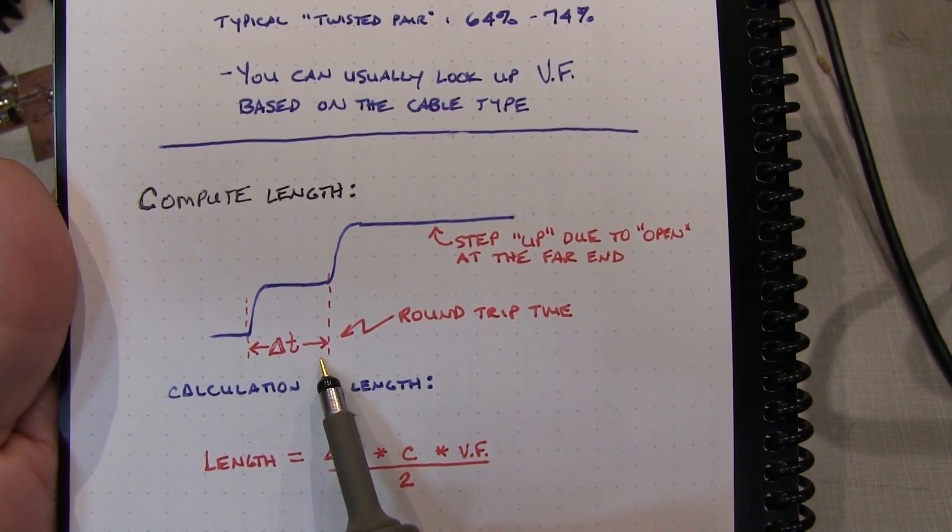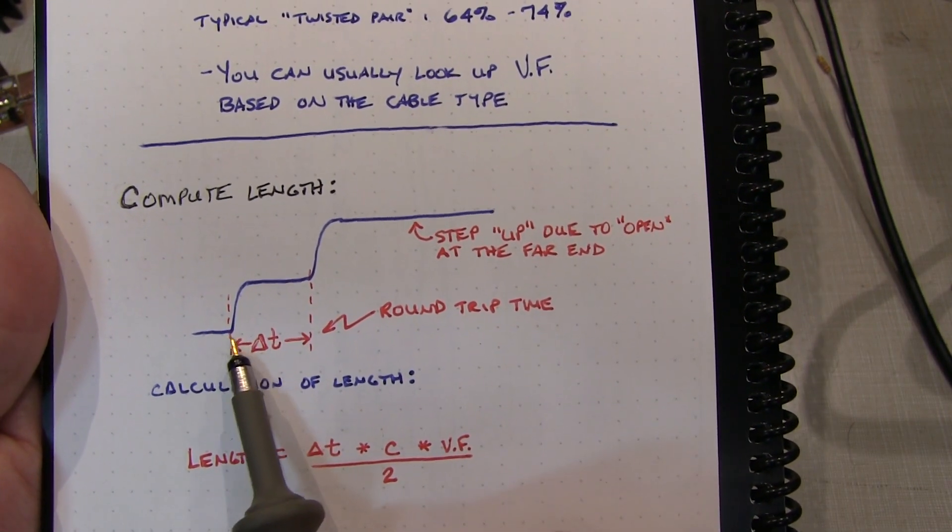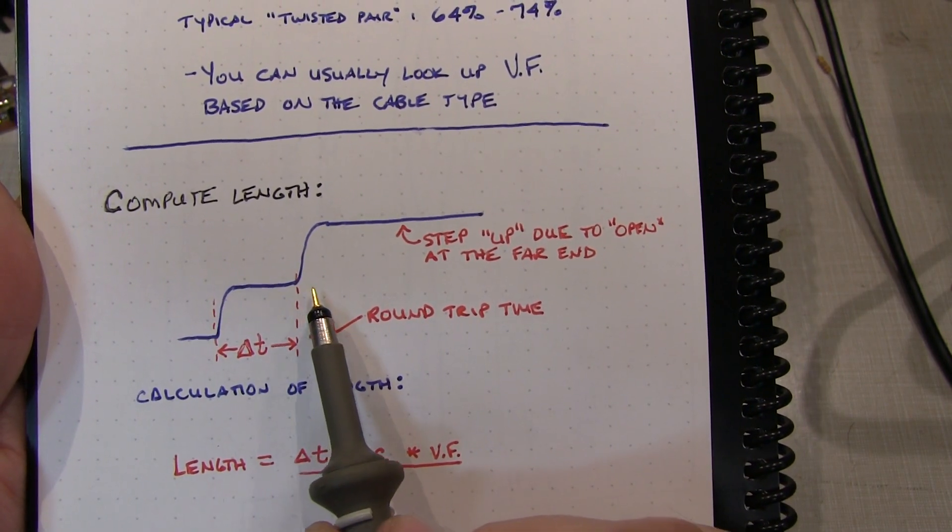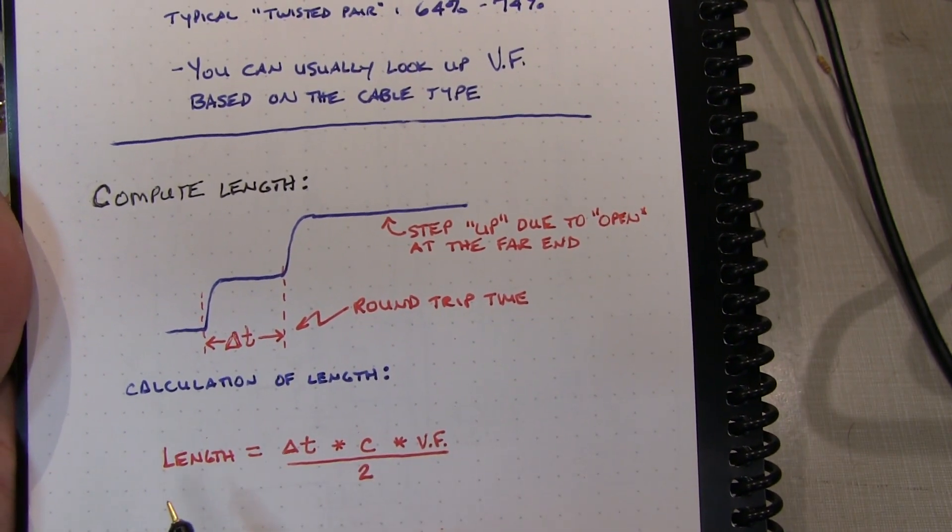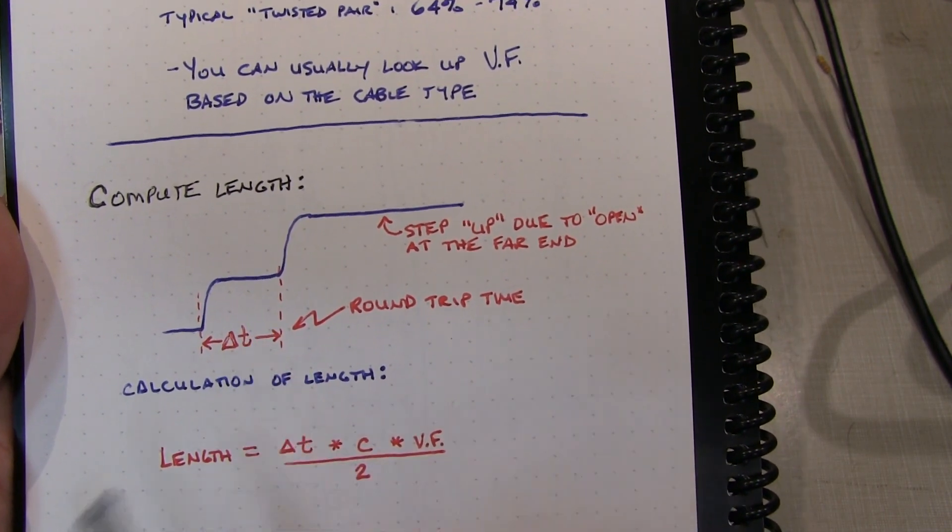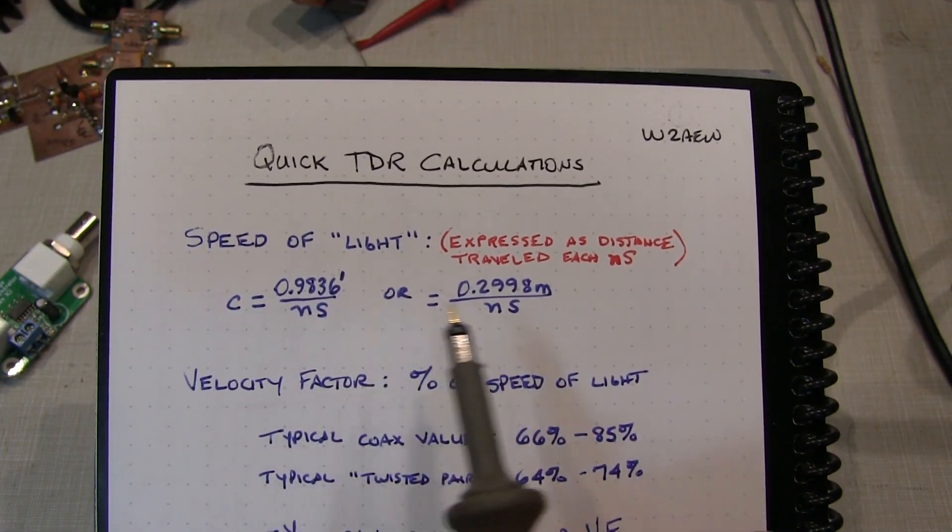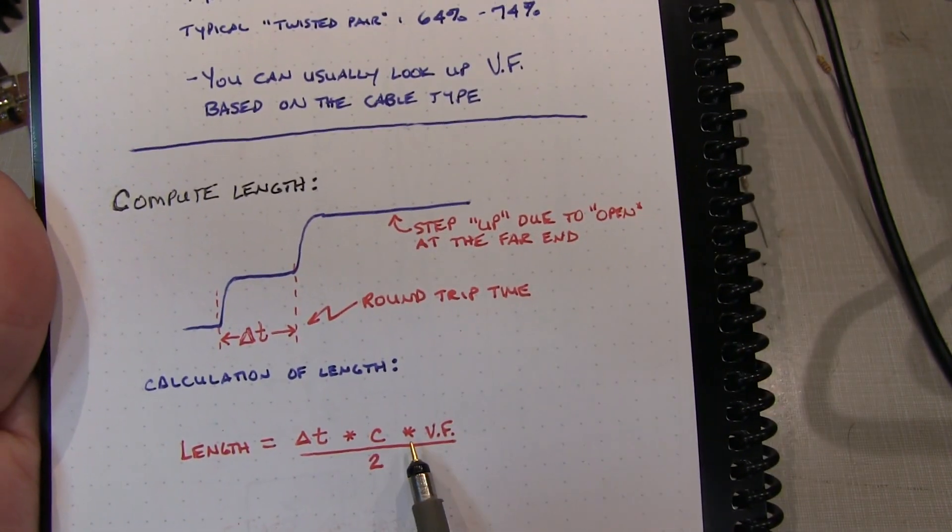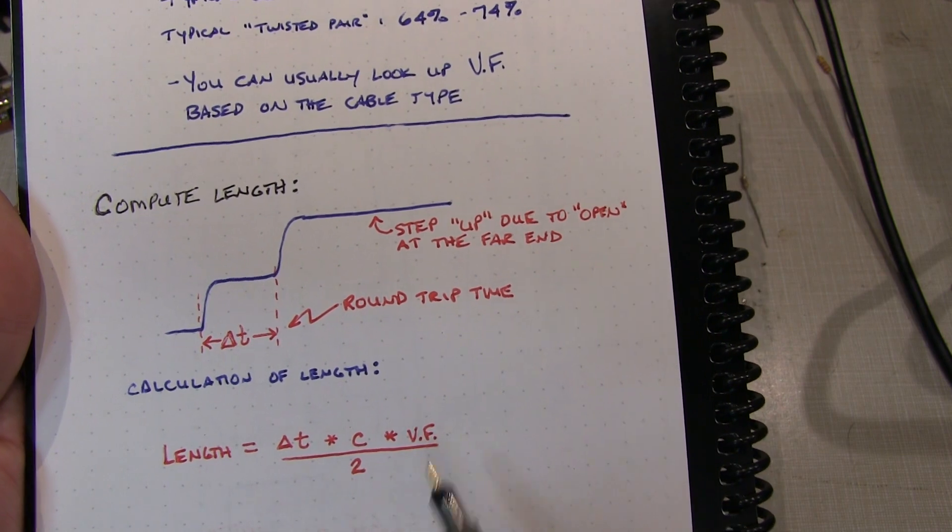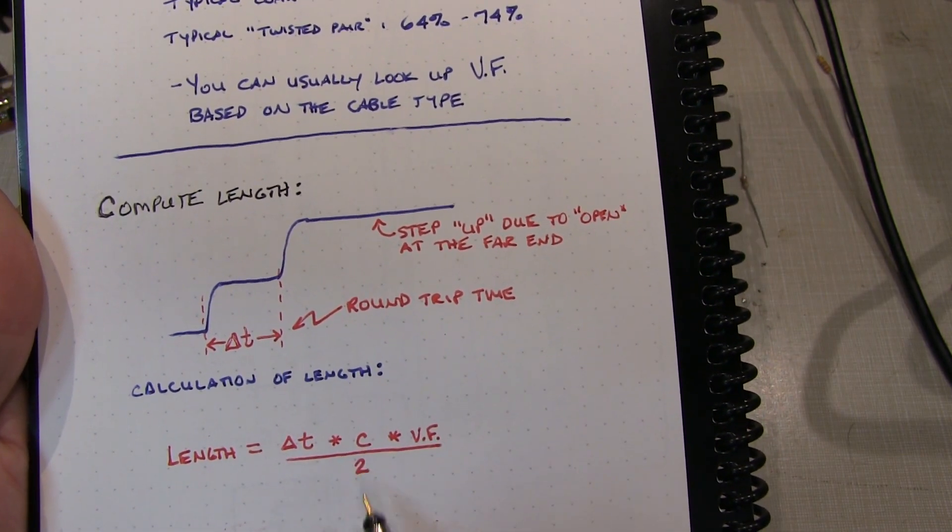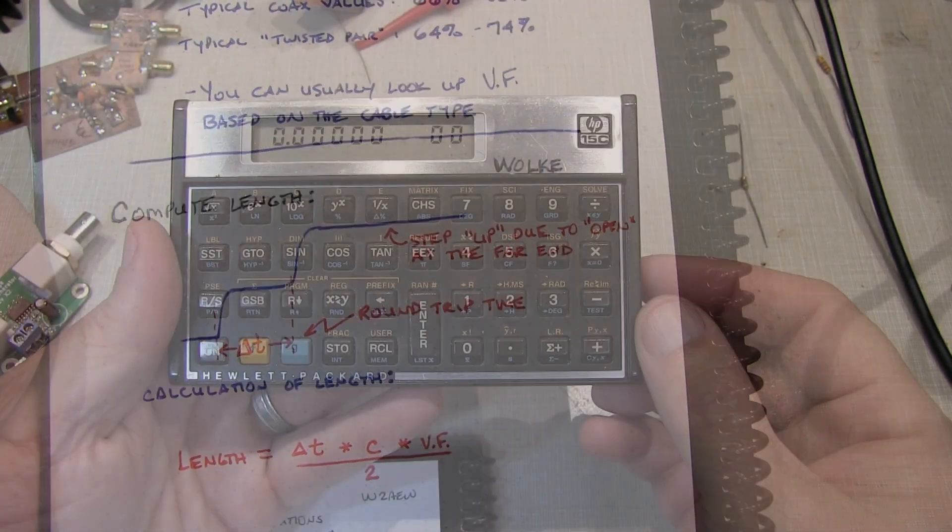So we take that delta T in nanoseconds. And remember, that's the round trip time. It's the time it took this injected signal to go down the line, hit the end, and then come back to the scope. So it's really twice the delay through the cable. If we take that value in nanoseconds and simply multiply it by our speed in feet or meters per nanosecond, multiply by the velocity factor. So if it's 66%, this would be 0.66. And because it's the round trip, we divide by 2. And that quite simply will give me the length of the line.